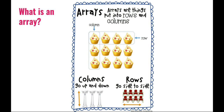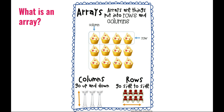Now let's look at columns. Columns go up and down like on a building. So we have one, two, three, four columns in this array. And that's important because we can figure out how many objects are in this array without having to count the individual cupcakes.